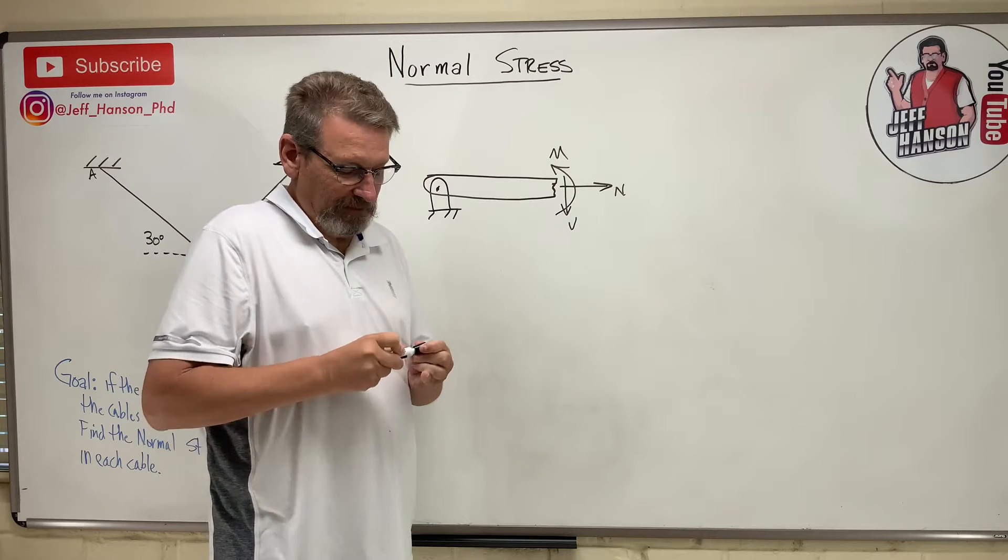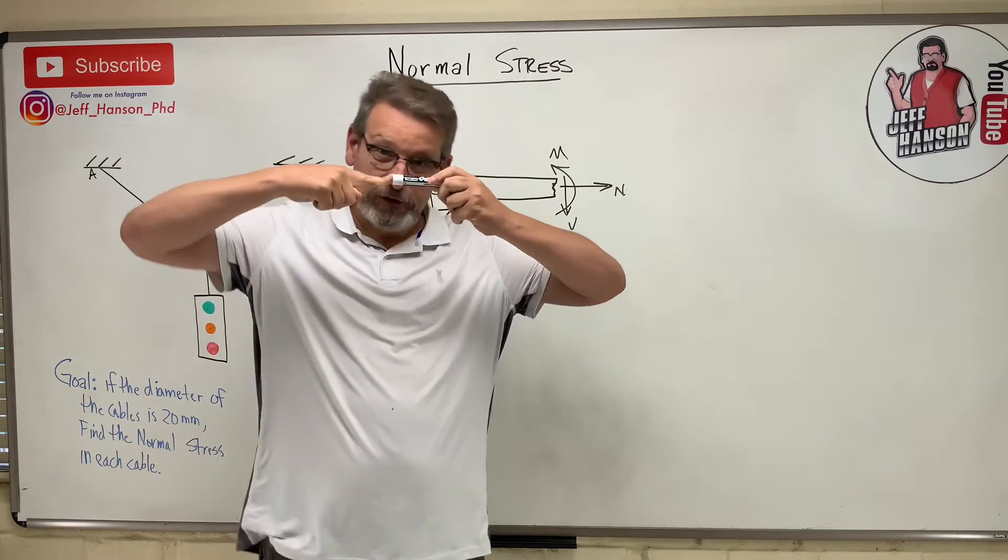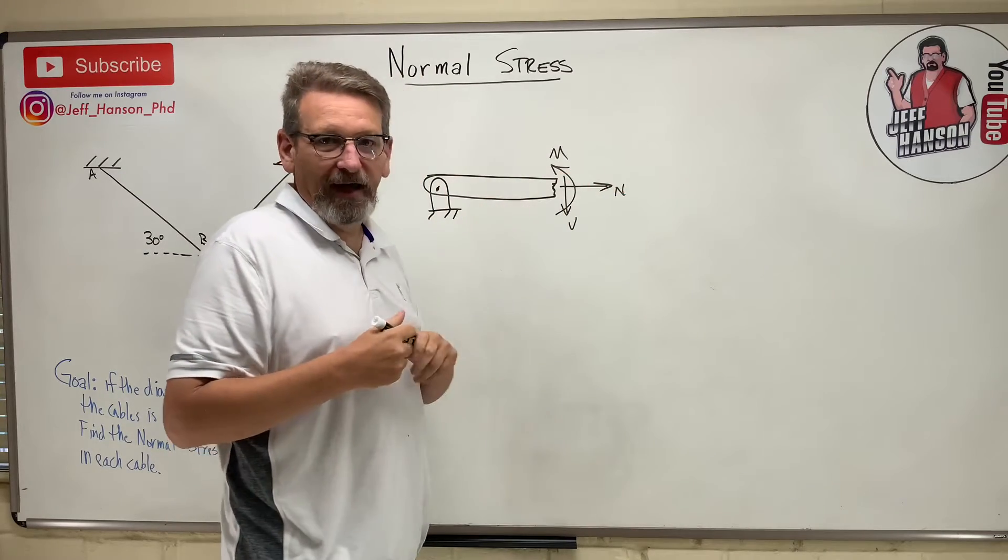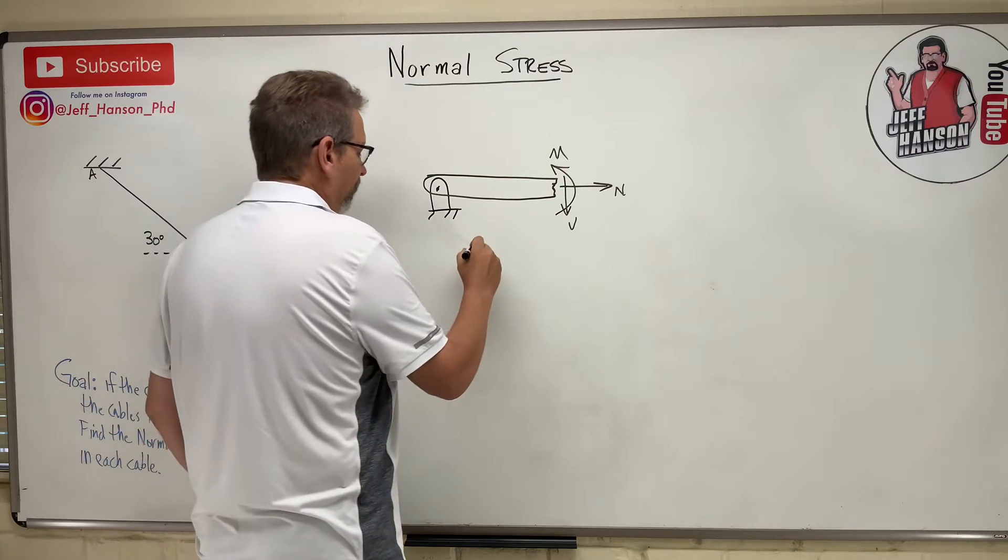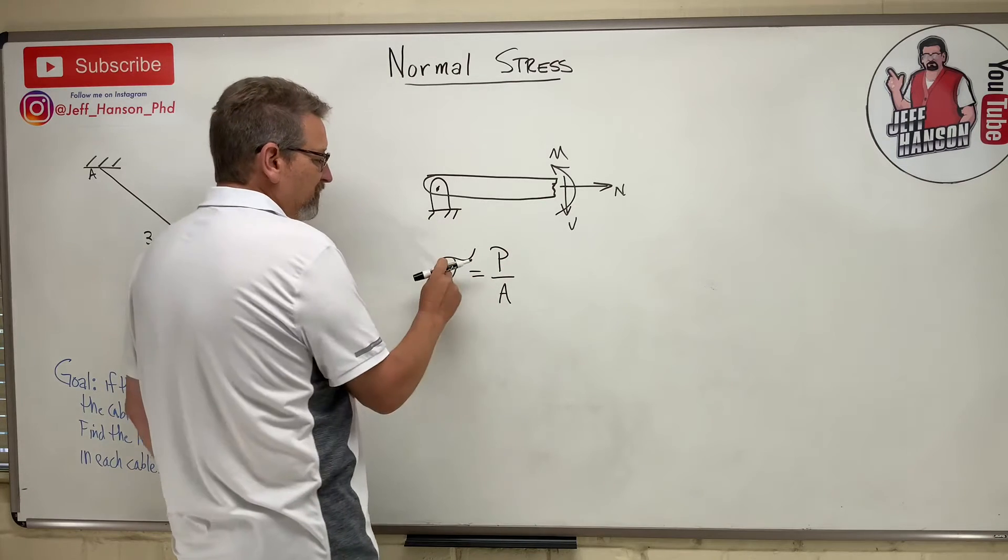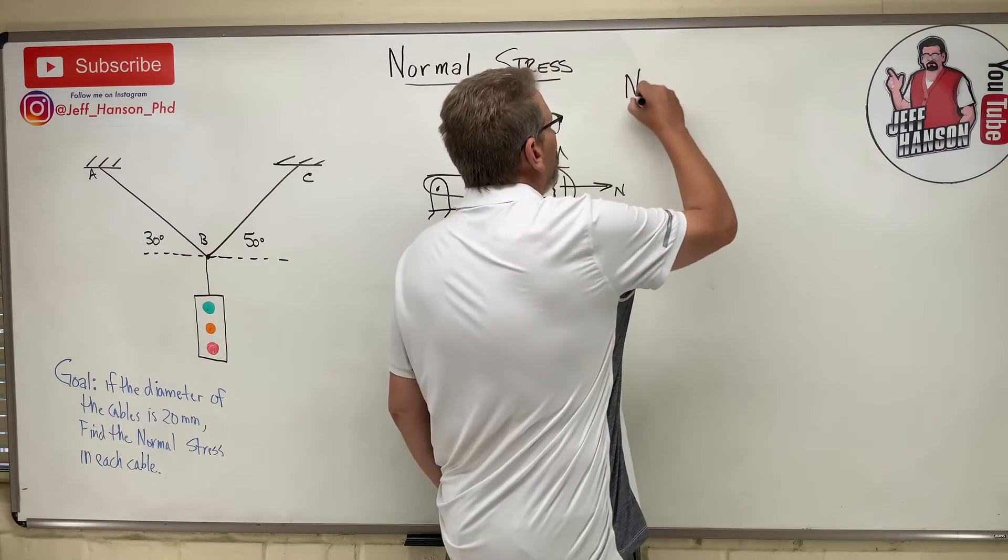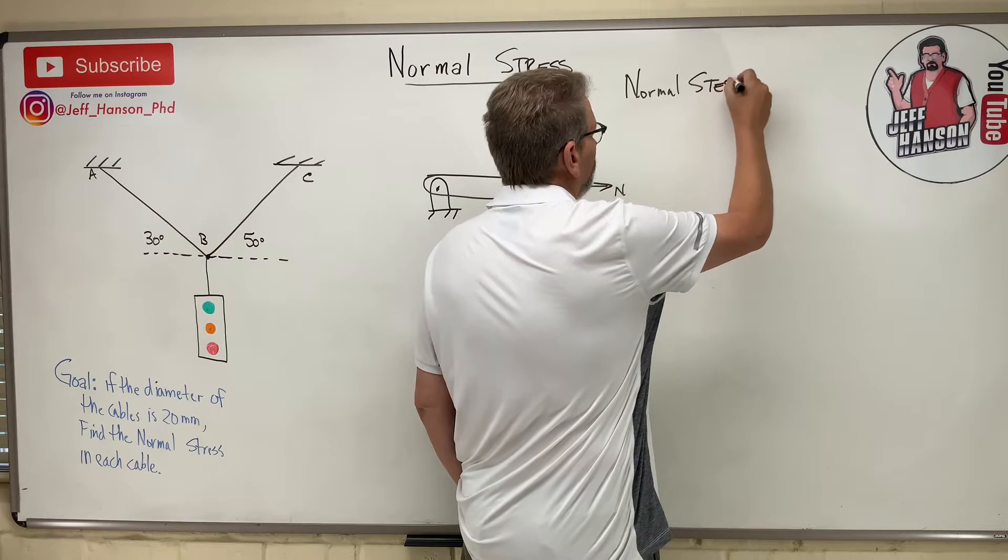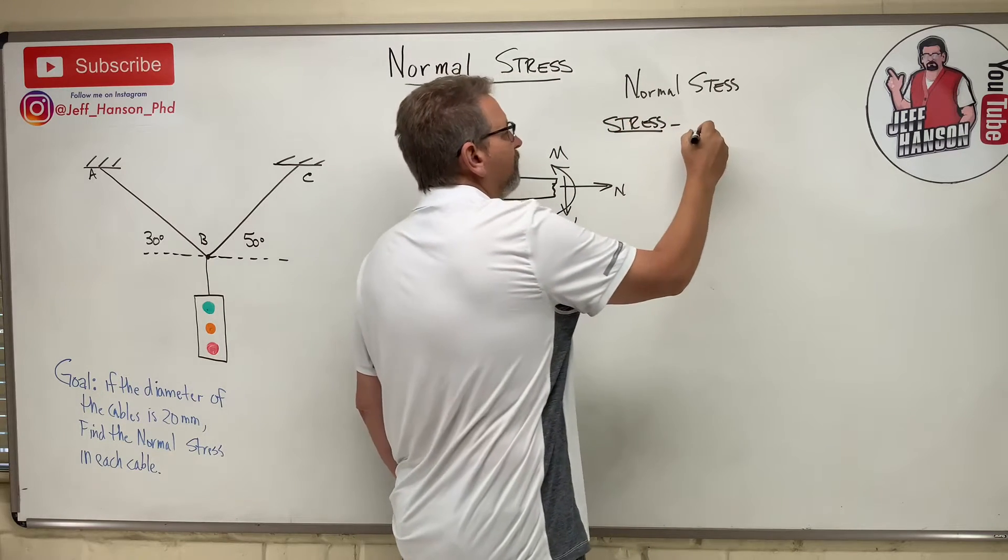You must have M, N, V, right? So that N, that normal force, is what causes normal stress. Normal stress is the stress due to the stretching or the compressing axially of a member, along the axis of the member. Normal stress is given by sigma equals P over A.